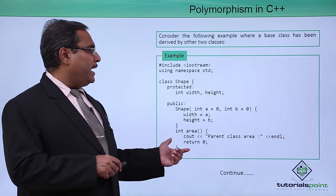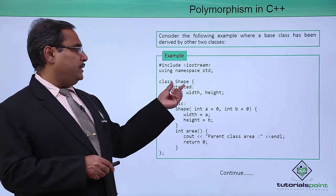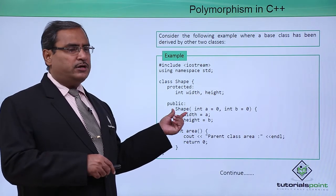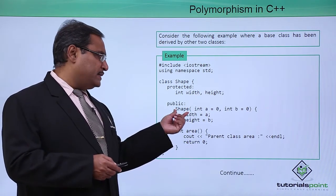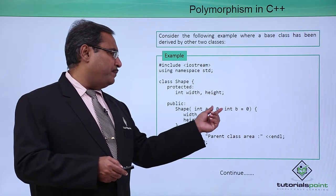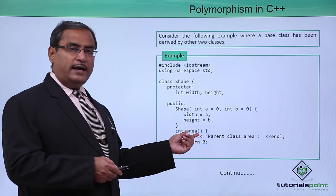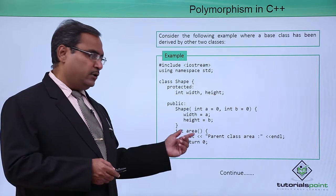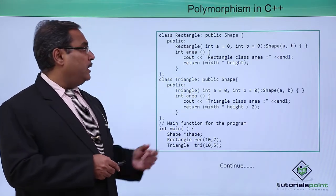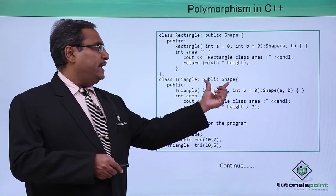Consider the following example. We have our Shapes class, then Rectangle, Triangle and Circle. Here you can see there is a class called Shape. This class has width and height. Shape is a constructor — its name is the same as that of the class name and it is a parameterized constructor. Whatever values we pass are used to initialize the width and height member variables. There is an int area function with a certain body. The class Rectangle is inheriting Shape, and the class Triangle is also inheriting Shape.